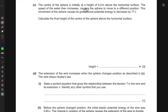Now the center of the sphere is initially at some height 6.2 meters above the horizontal surface. The speed of the water then increases causing the sphere to move to a different position. This movement of the sphere causes its gravitational potential energy to decrease by 77. So the potential energy is decreasing by 77 which means it's a change in the potential energy. Calculate the final height of the center of the sphere above the horizontal surface. Now we know that the change in potential energy is given as the product of mass times the acceleration due to gravity times the change in the height.